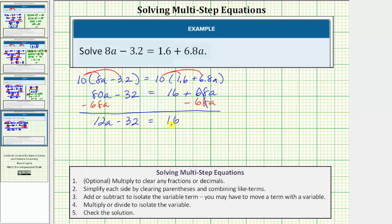We're still on step three. We still need to add or subtract to isolate the variable term, which is now 12a. Notice on the left we have 12a minus 32. We need to undo this minus 32 by performing the opposite or inverse operation in order to isolate 12a. Well the opposite operation of minus 32 is plus 32. So for the next step we'll add 32 to both sides of the equation.